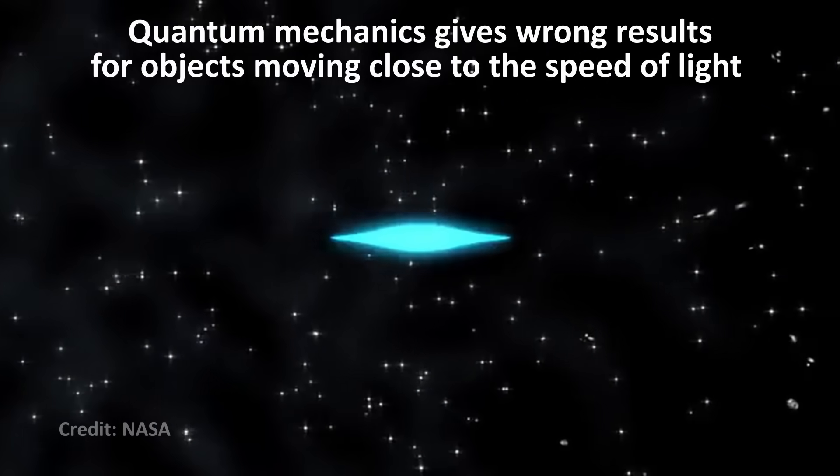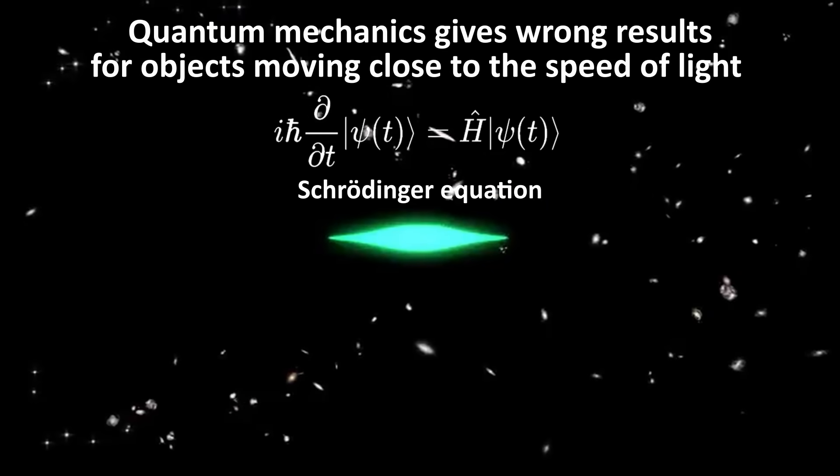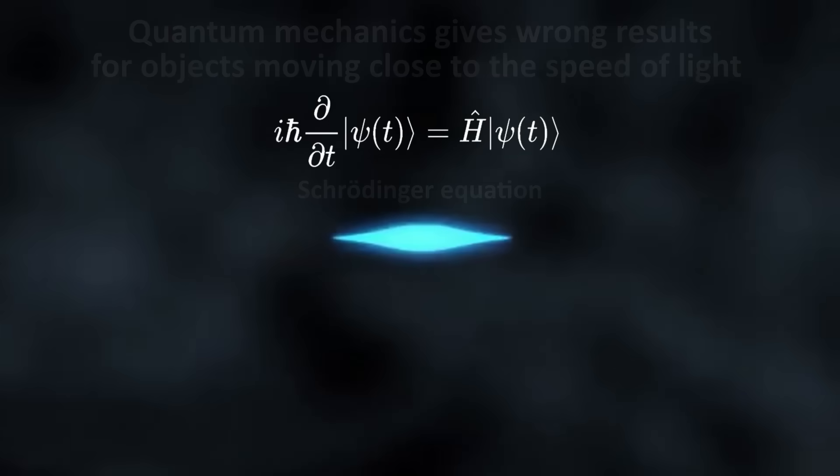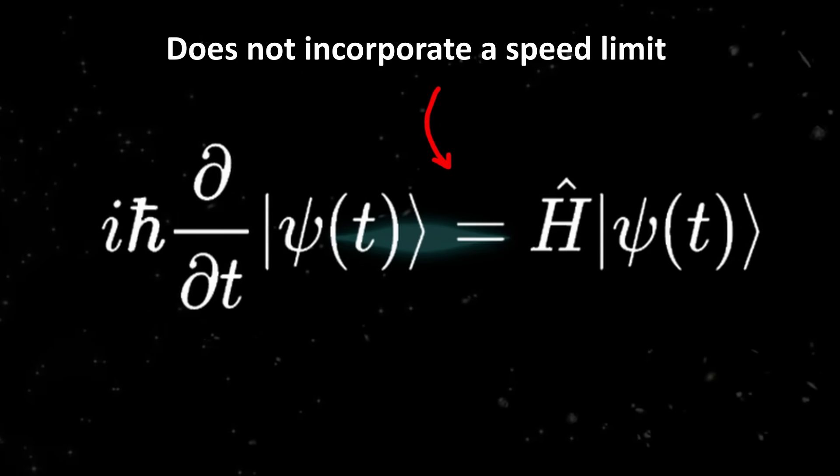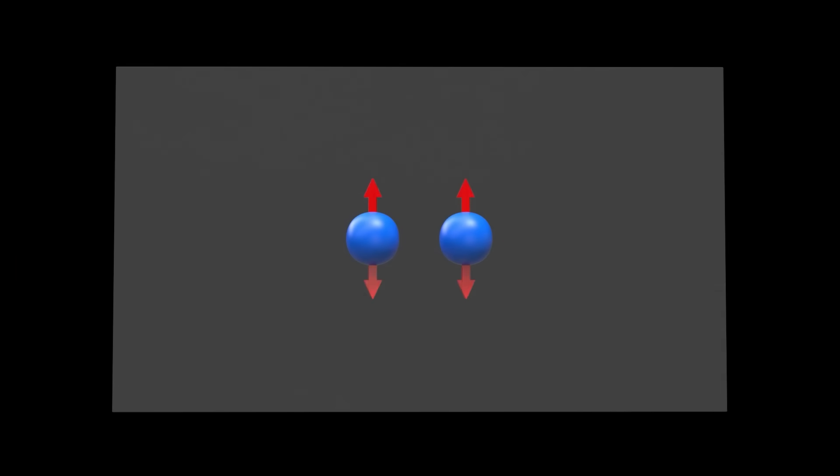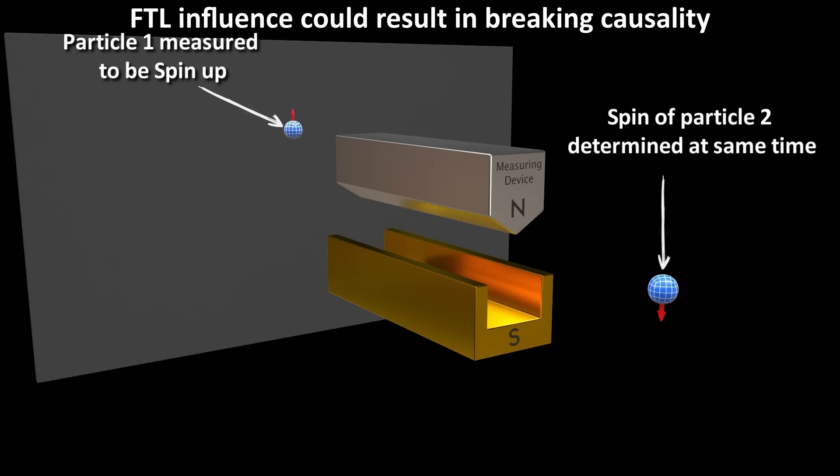First of all, quantum mechanics is not relativistic. That is, it will give you wrong results if the quantum object is moving close to the speed of light. Schrodinger's equation simply doesn't obey Einstein's theory of special relativity. The practical result of this is that it doesn't incorporate a speed limit, the speed of light, needed to make causality work. For example, it allows for two measurements to influence each other faster than light. This would mean that there would be some reference frame in which the future could influence the past, breaking causality.